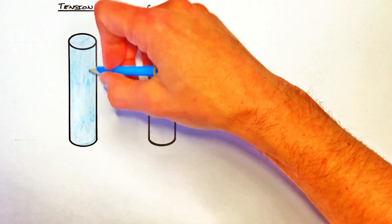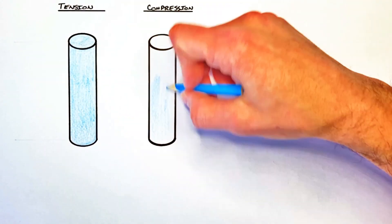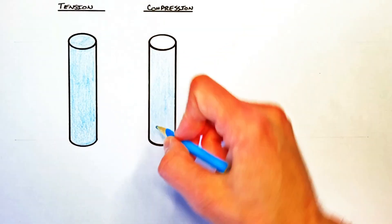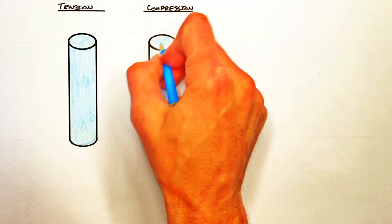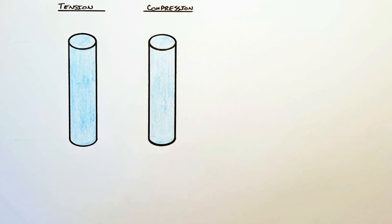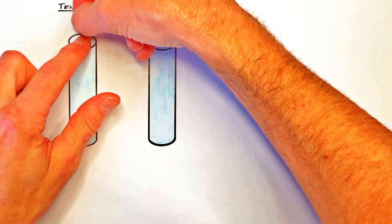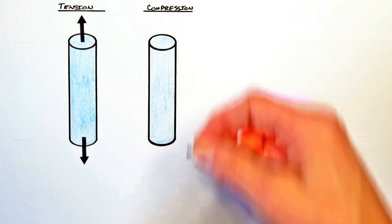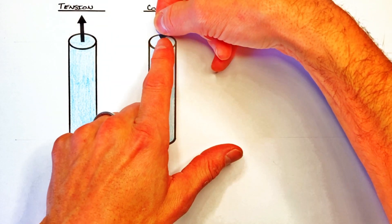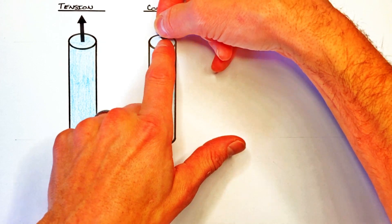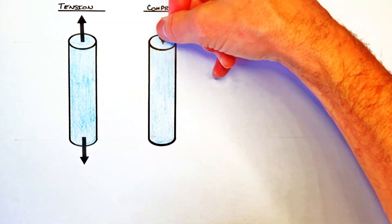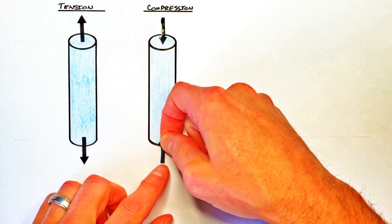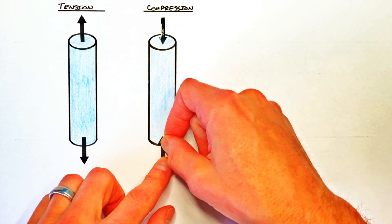The first thing I need to clarify is the difference between tension and compression. When an object is under tension, it's being pulled apart. And when an object is under compression, it's being pushed on from each end, trying to squish the part together.